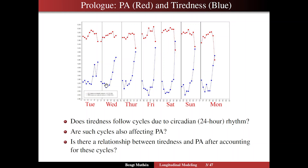We see that tiredness has a dip — you are perkier in the middle of the day — and increases to higher tiredness towards the evening. That seems to be the cycle that happens every day, and that is expected for tiredness to follow a circadian 24-hour rhythm, which we could capture with the so-called cosinor model — that is, a sine-cosine type of function. We may also wonder if such cycles affect PA: positive affect increases towards the middle of the day and then goes down, repeatedly, suggesting that PA variation may also be captured by a circadian cycles model.